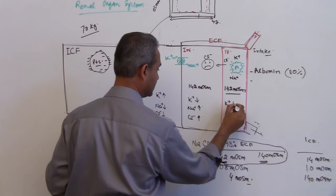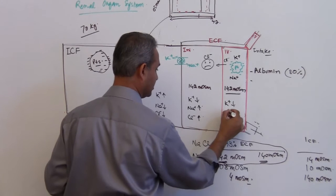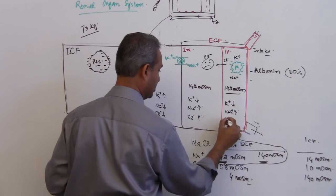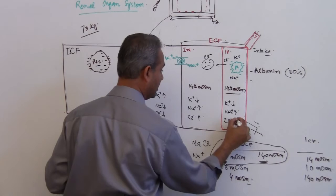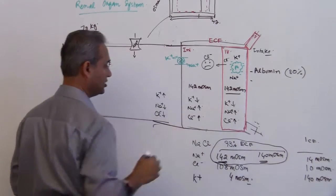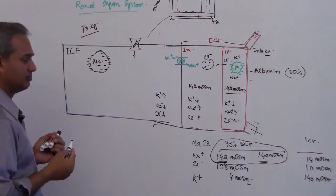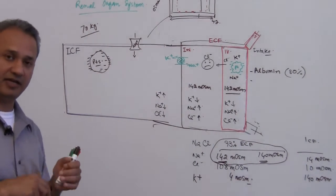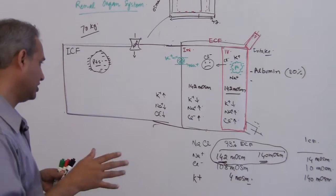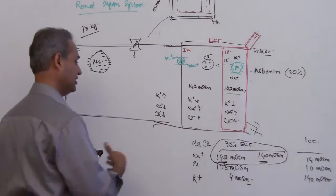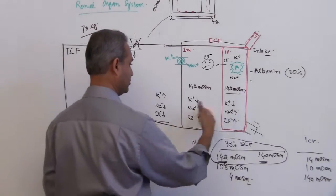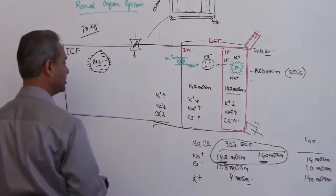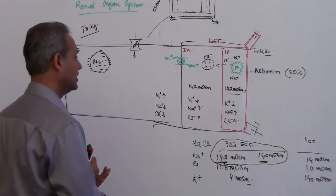Here potassium is less, sodium is more, and chloride is more. Please remember that the Donnan effect is in practice not really entertained that much, so we say that sodium osmolarity is 142 in both of these compartments.